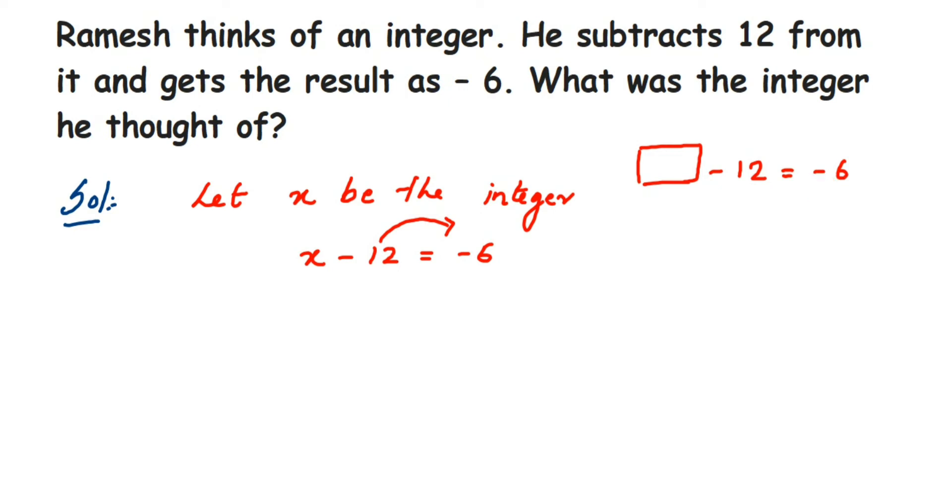If I take any number greater than 12, it has to be positive, and in that case the final answer will be positive. This means that the number we got is smaller than 12. So how much should we subtract from this number to get 6?